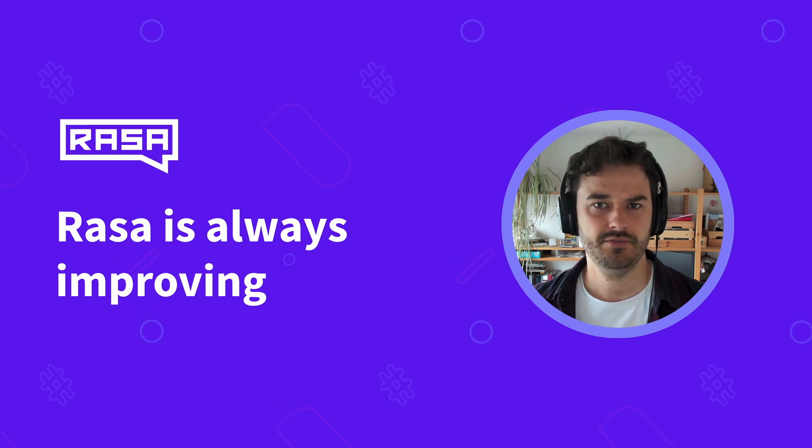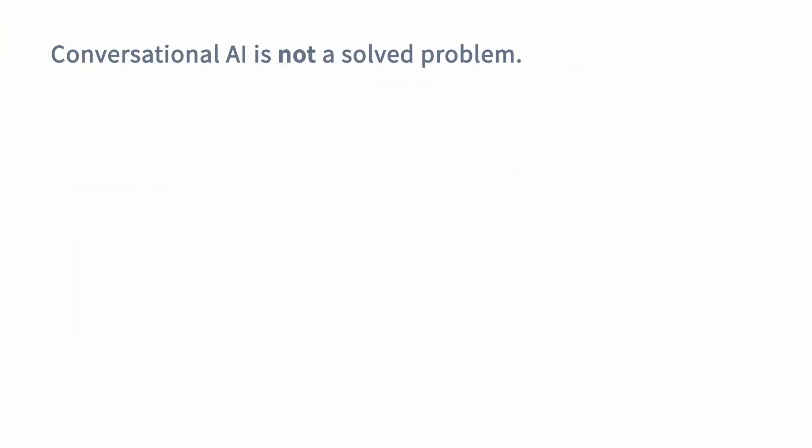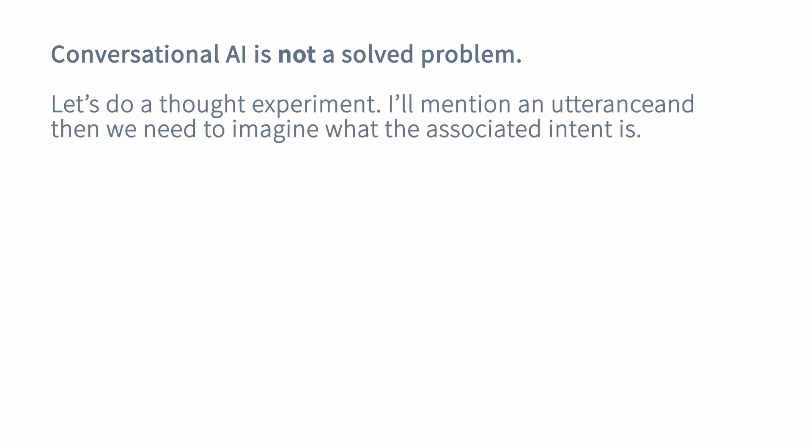Let's do a thought experiment. I'll mention an utterance and then we have to imagine what the associated intent might be. Let's start by considering 'yes.' A user has just said yes — and you could say that yes sounds like the user might be trying to affirm. Yes is a clear example of a user indicating that they want to affirm something.